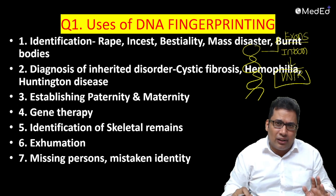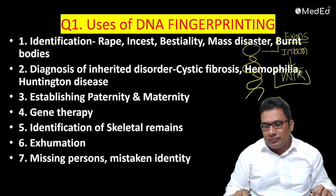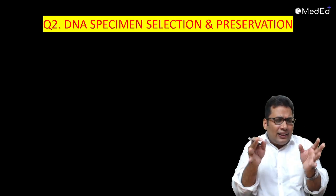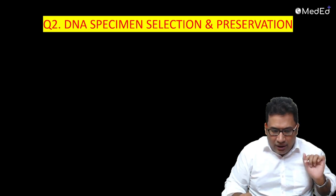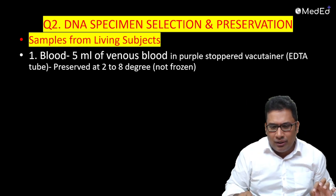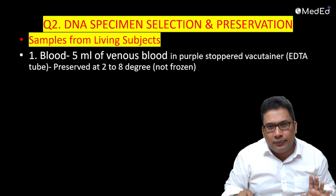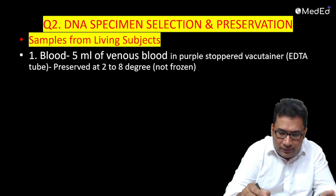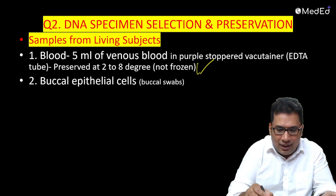The most important indication to mention is identification and also paternity and maternity. Second question: what are the DNA samples to be collected in a living person and in a dead person? For a living person: blood - around 5 ml of blood in a purple stoppered vacutainer which contains EDTA as anticoagulant, preserved at 2 to 8 degrees Celsius, but remember - not frozen. Or you can use buccal epithelial cells, or buccal swabs.